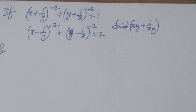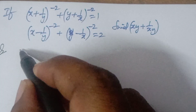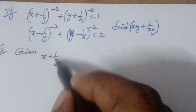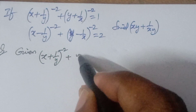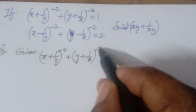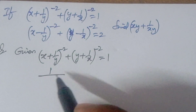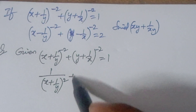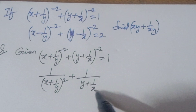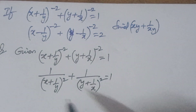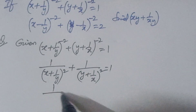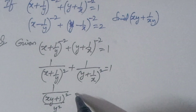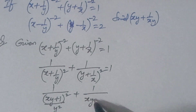So the first equation given is (x + 1/y)^(-2) + (y + 1/x)^(-2) = 1. This can be rewritten as 1/(x + 1/y)^2 + 1/(y + 1/x)^2 = 1, which further becomes 1/(xy + 1)^2 * y^2 + 1/(xy + 1)^2 * x^2 = 1.